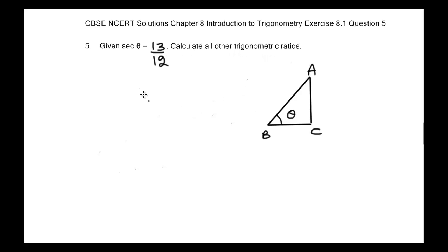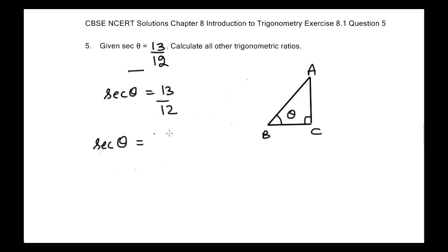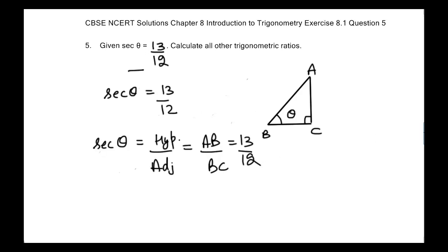Let's suppose we have a right angle triangle ABC, right angled at C, and angle B is equal to angle theta. We are given secant theta is equal to 13 divided by 12. We know that secant of any given angle is equal to hypotenuse divided by adjacent side. The hypotenuse in this triangle is AB and the adjacent side to angle theta is BC, giving us a ratio of AB to BC equal to 13 divided by 12.